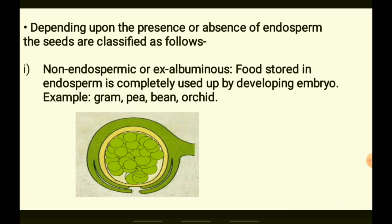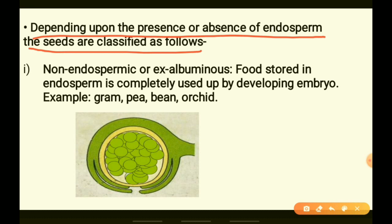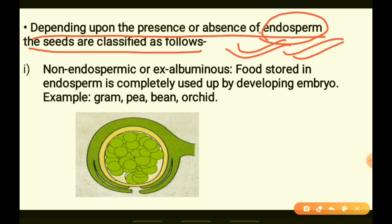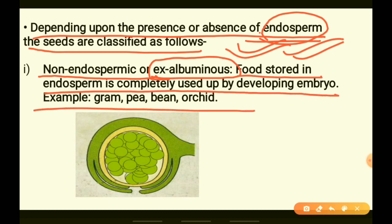Depending upon the presence or absence of endosperm — the nutritive tissue surrounding the embryo — seeds can be classified as endospermic (albuminous) or non-endospermic (ex-albuminous). Non-endospermic seeds store food that is completely used up by the embryo during development.